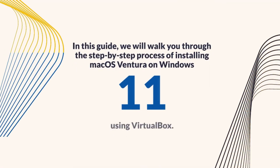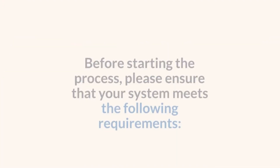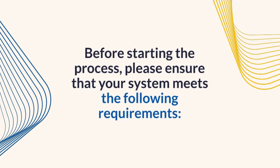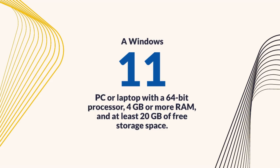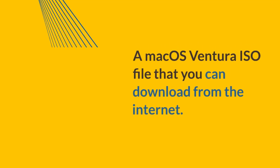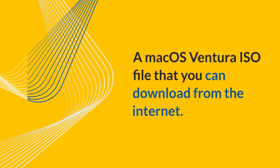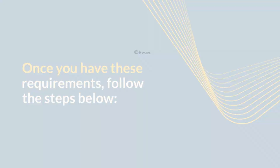In this guide, we will walk you through the step-by-step process of installing macOS Ventura on Windows 11 using VirtualBox. Before starting the process, please ensure that your system meets the following requirements: a Windows 11 PC or laptop with a 64-bit processor, 4GB or more RAM, and at least 20GB of free storage space, a stable and fast internet connection, and a macOS Ventura ISO file that you can download from the internet. Once you have these requirements, follow the steps below.